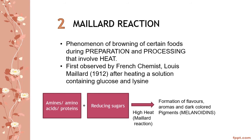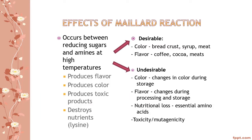In the Maillard reaction, amines, amino acids, or proteins react with reducing sugars at high heat and form some flavors, aromas, or dark colored pigment called melanoidins. This reaction occurs between reducing sugar and amines at high temperature, which will produce flavor, color, or toxic products, and also destroy nutrients such as lysine.